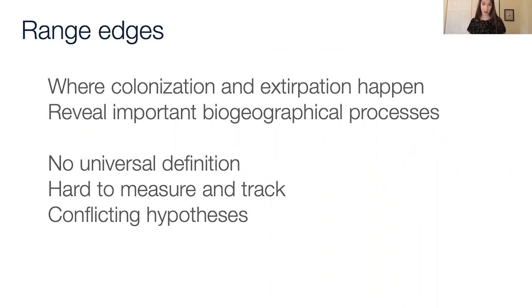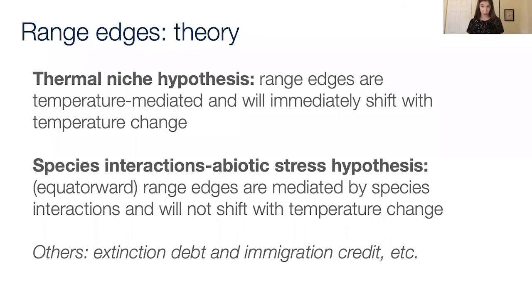So I started trying to conduct these types of field tests using marine data. The first two theories that I started with are the thermal niche hypothesis. You can also think of this as an ecophysiology hypothesis. It proposes that range edges are temperature mediated, and as soon as temperature changes, the edge will shift. This is sort of implicitly what is often assumed about marine ectotherms. The other hypothesis was from terrestrial biogeography, proposing that the poleward range edge maybe is mediated by temperature, but the equatorward range edge, which faces less climate variability but more biodiversity, that one is mediated by interactions like competition or predation. This is called the species interactions abiotic stress hypothesis.